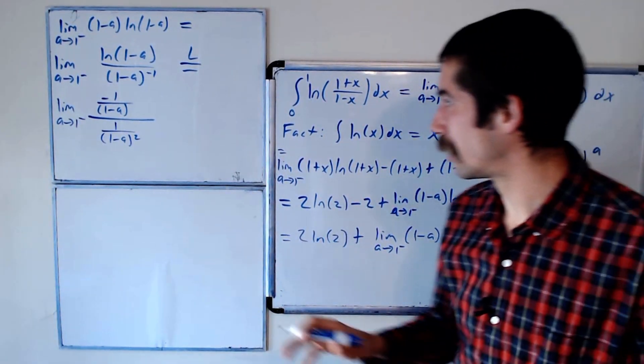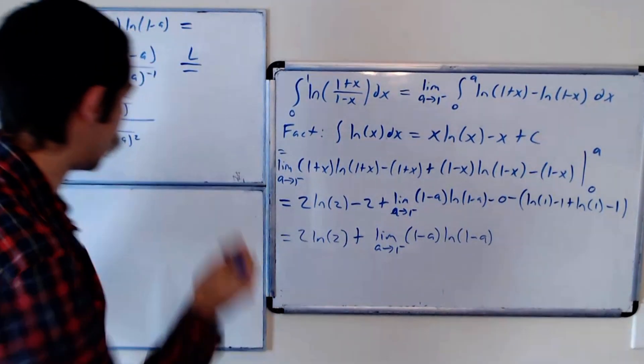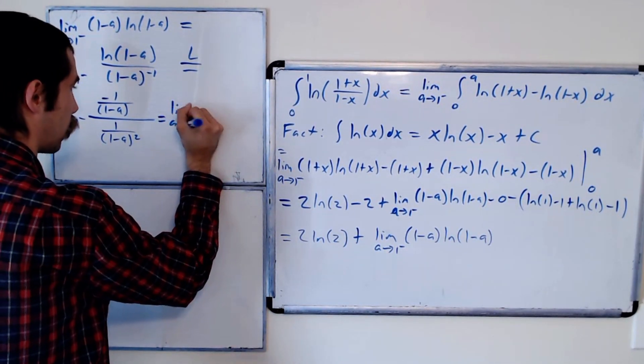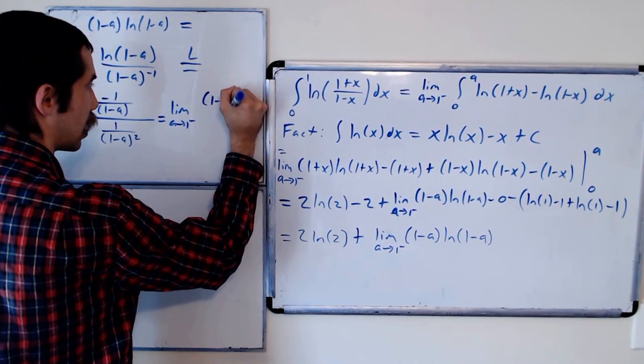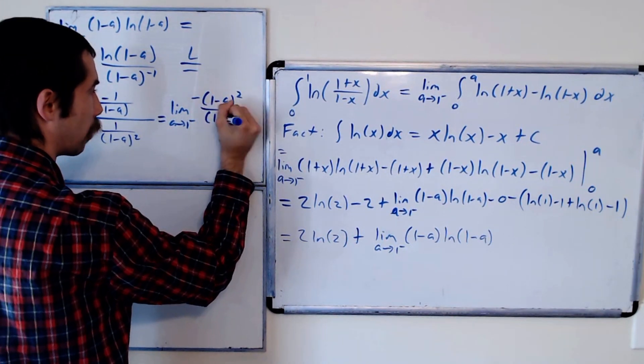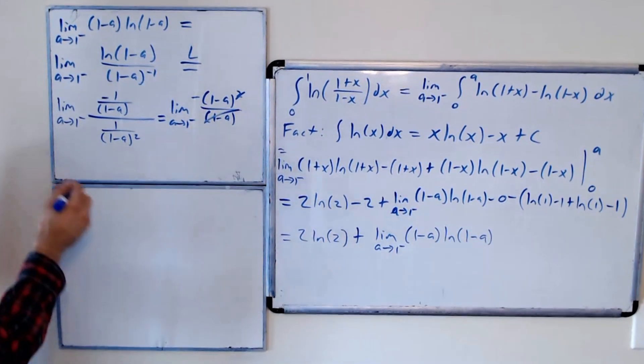And so we're going to be able to evaluate this. Let's clean this up, and then we could evaluate the limit. So this is equal to the limit, as a goes to 1 from the left, of 1 minus a squared over, negative 1 minus a squared over 1 minus a. Cancel, cancel. This is equal to 0.